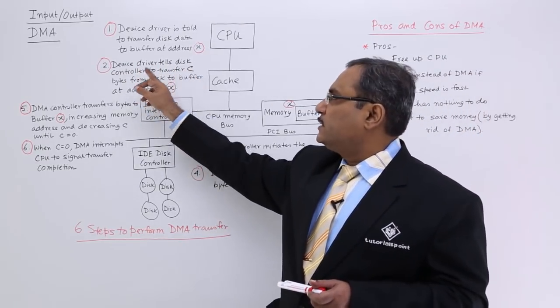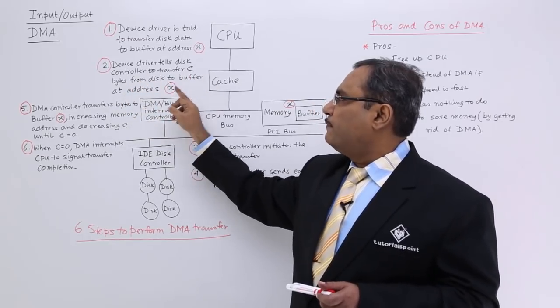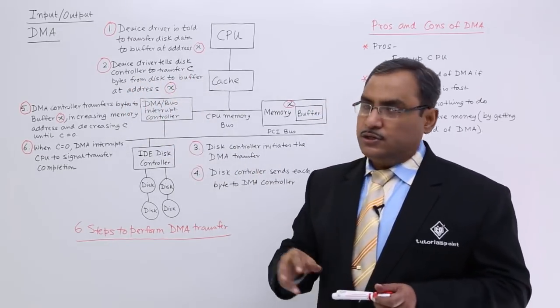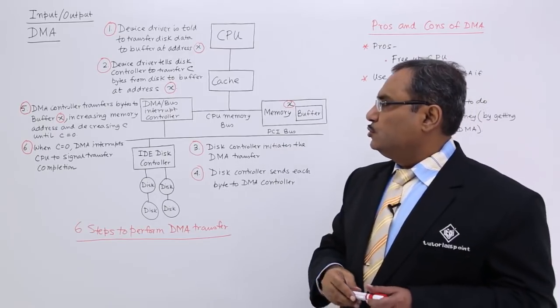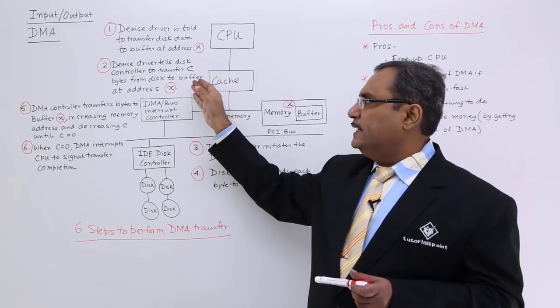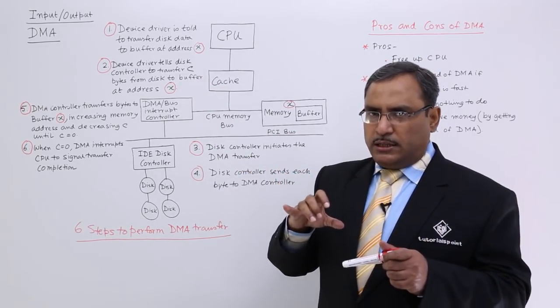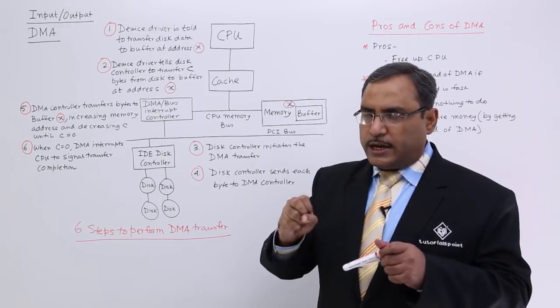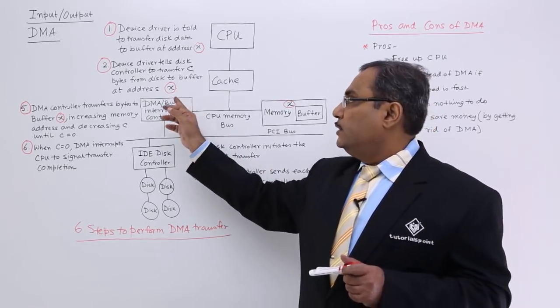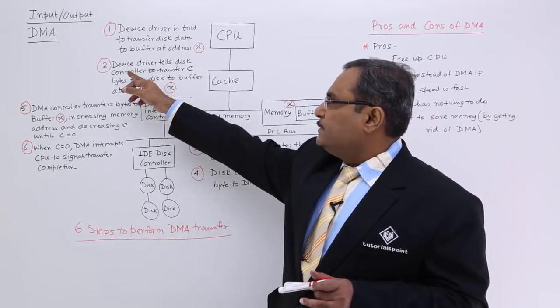Device driver tells disk controller to transfer c bytes from disk to the buffer at address x. Device controller will get the required information or required instruction in a certain format in which the disk controller can understand from the device driver. Disk controller is nothing but hardware. That is my step number 2.